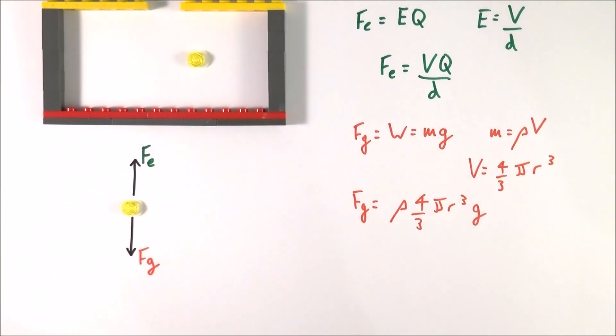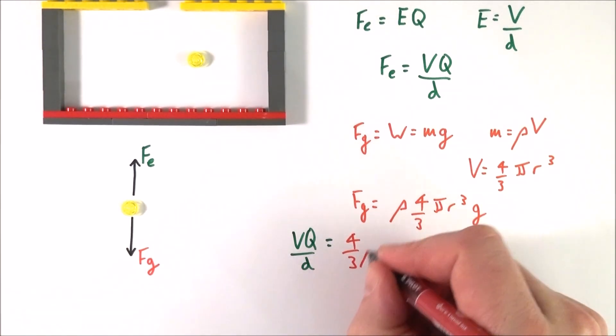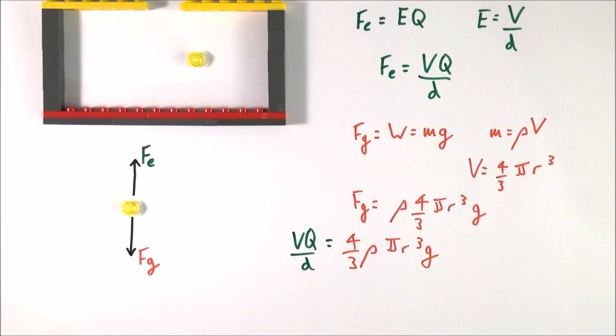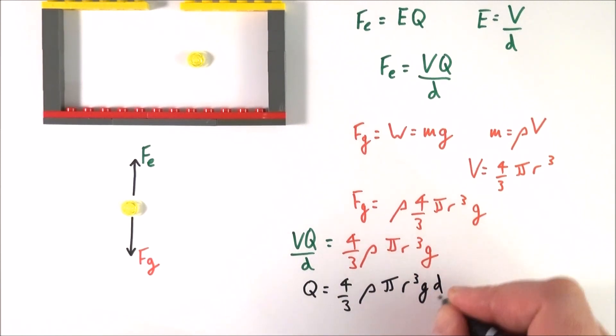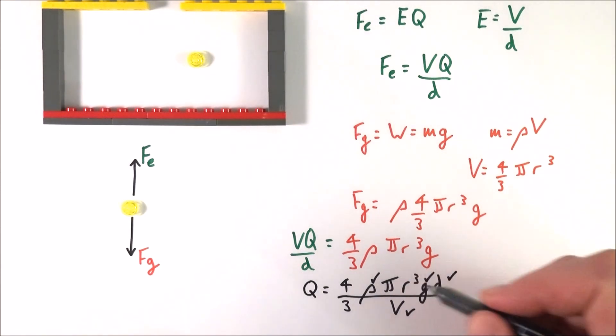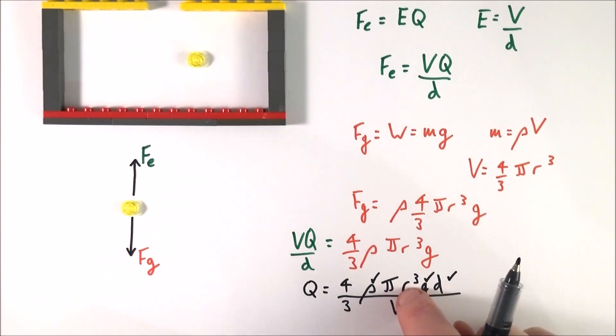So because we know Fe is equal to Fg, what I can say is that Vq over D is equal to four thirds rho pi r cubed g. And if I rearrange this to make Q the subject we can say that Q is equal to four thirds rho pi r cubed gd all divided by the potential difference between the plates. If you know the density of the oil, if you know the gravitational field strength, the distance between the plates, the potential difference, we know what pi is, and then we just need to find out what r cubed is. There are various ways that you might see about this. It might say that you measure r directly, but it's very hard to actually get a very accurate measurement of r. This is something here that was a bit of a problem. And on the next part of this video I'm going to explain how they actually found out the value of r.